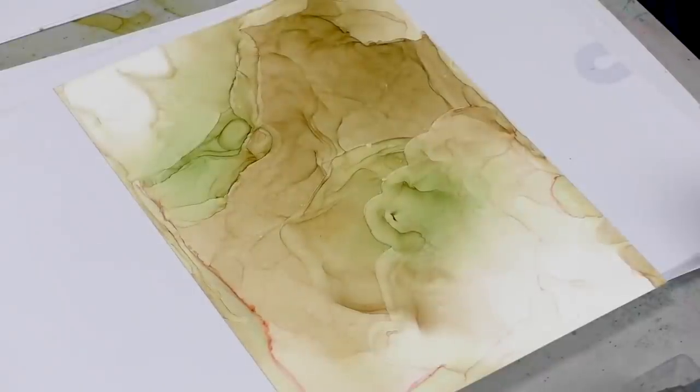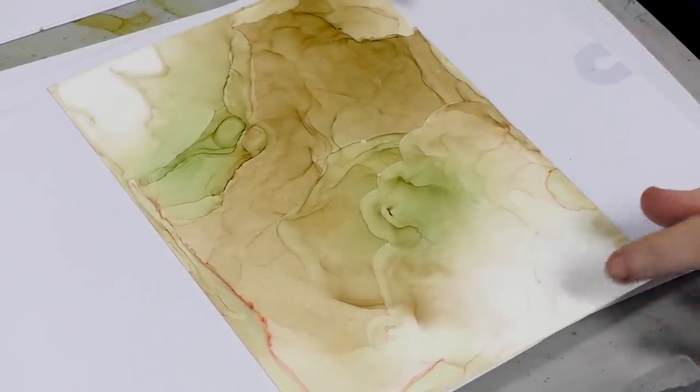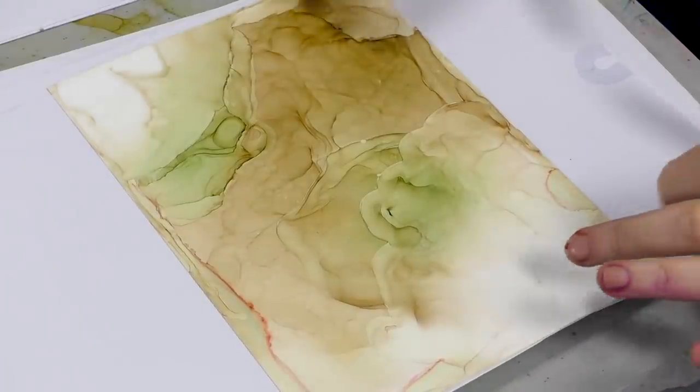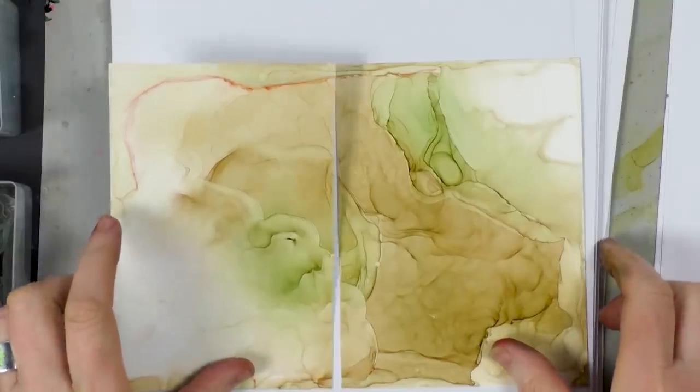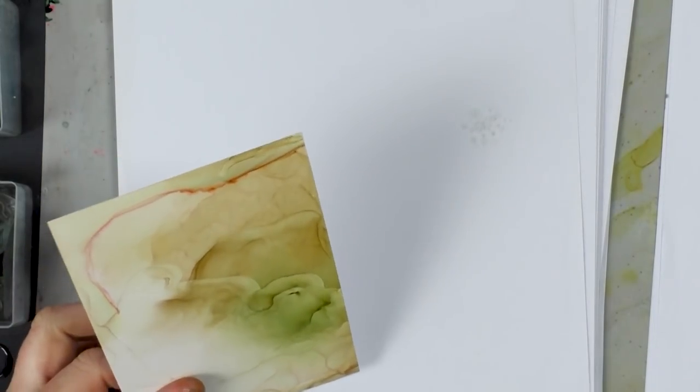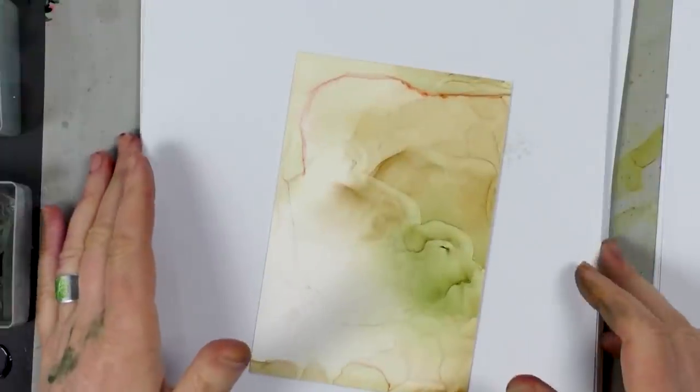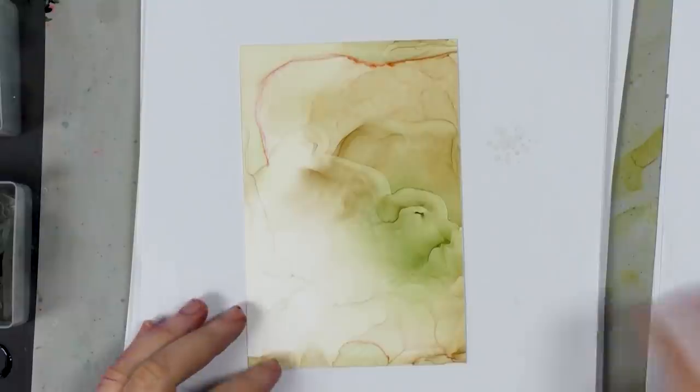Okay, so we're back with our first card now. This was using alcohol blending solution, alcohol inks and our Yuppo. And all I've done is just cut that down the middle to make two A6 sizes. So I'm going to be working with this one. And we're going to be stamping onto it now.